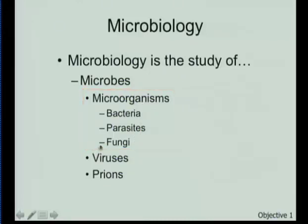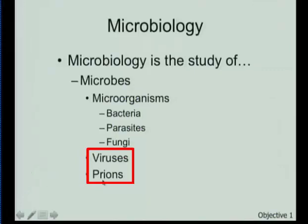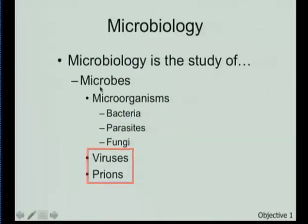We can also have systemic or deep fungal infections. Because bacteria, parasites, and fungi are living organisms, we call them microorganisms. But then we have two other groups: viruses and prions — sometimes pronounced 'prion.' Because these are not living, a prion is an infectious protein and a virus is an infectious piece of DNA or RNA — a hunk of nucleic acid that incorporates itself into our cells. Since they require an intracellular environment to proliferate, we can't call them microorganisms, but we can call them microbes. So microbiology is the study of microbes, which includes microorganisms.